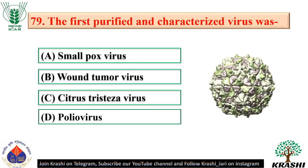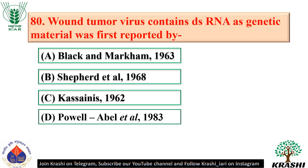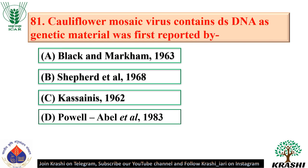Question number 79: The first purified and characterized virus was poliovirus — option D. Question number 80: Wound tumor virus contains double-stranded RNA as genetic material, first reported by Shefford et al. in 1968 — option B. Question number 81: Cauliflower mosaic virus contains double-stranded DNA as the genetic material, also first reported by Shefford et al. in 1968 — option B.